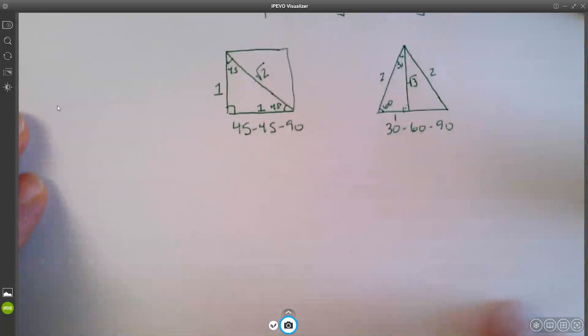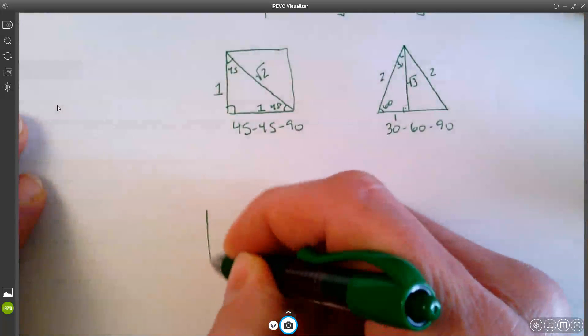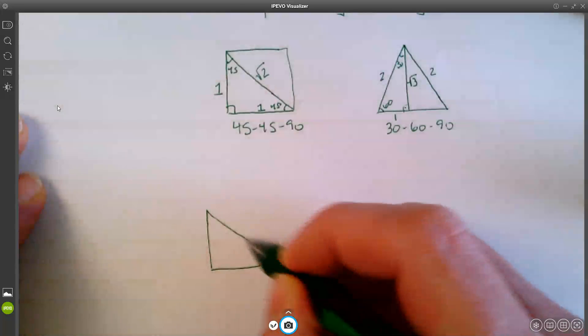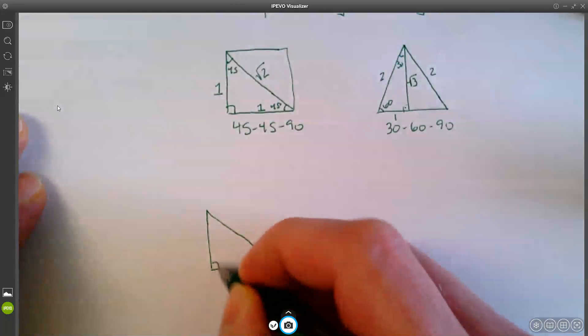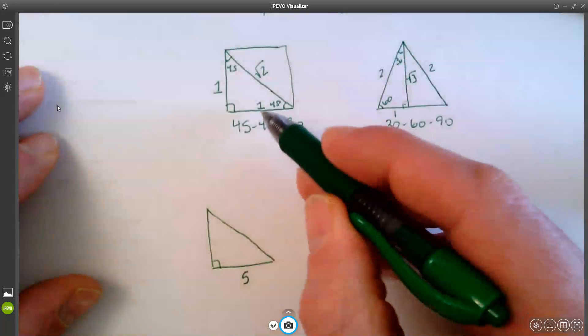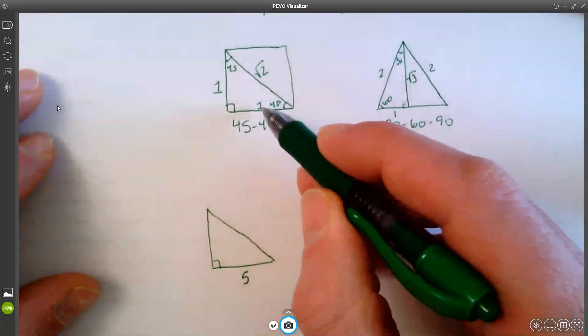So for example, say I had something like this. And say I knew this was a 5, right? I was like, well, what are the other two sides? Well, if I could set up a proportion, I would say, for example,